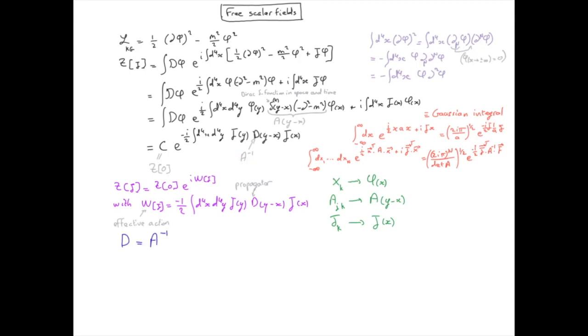We know that in the discretized case, the inverse of a matrix A is given by A times its inverse equal to the identity. Written in terms of the matrix elements of these matrices we have...